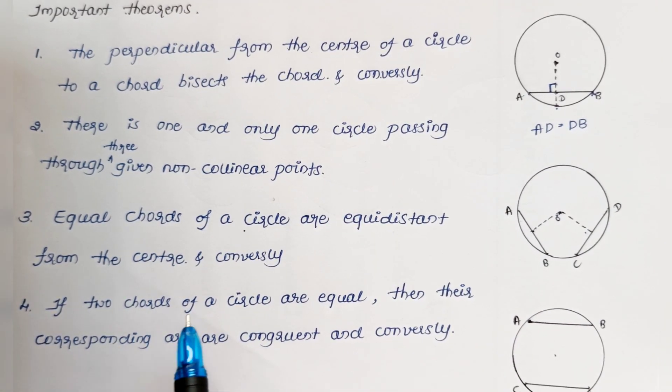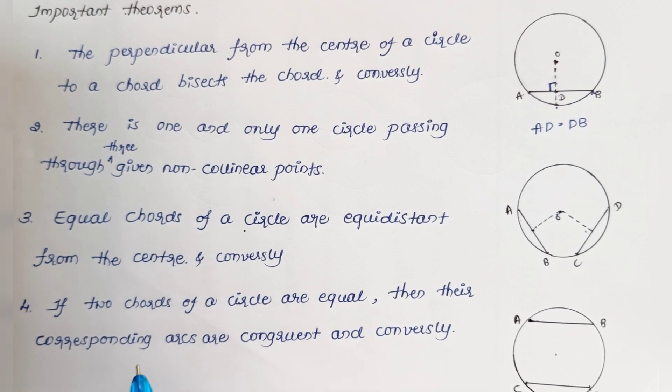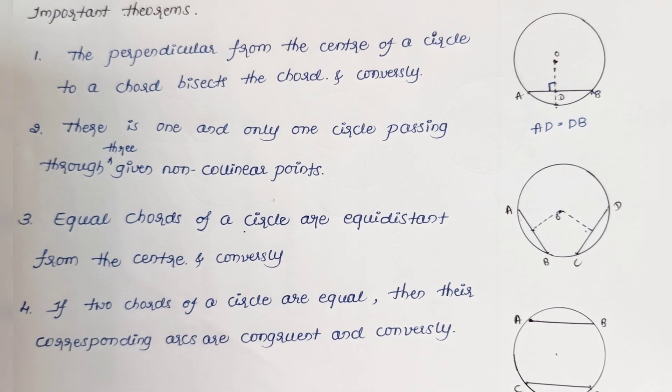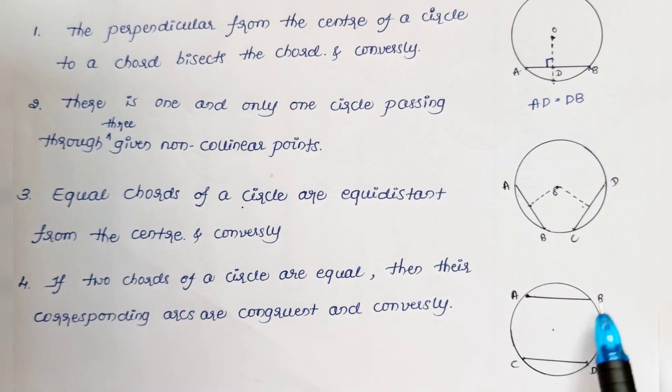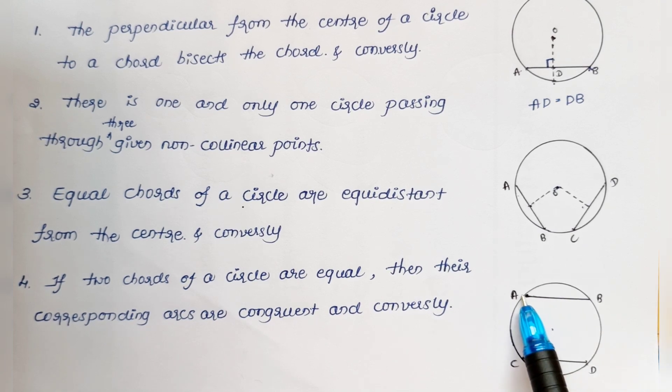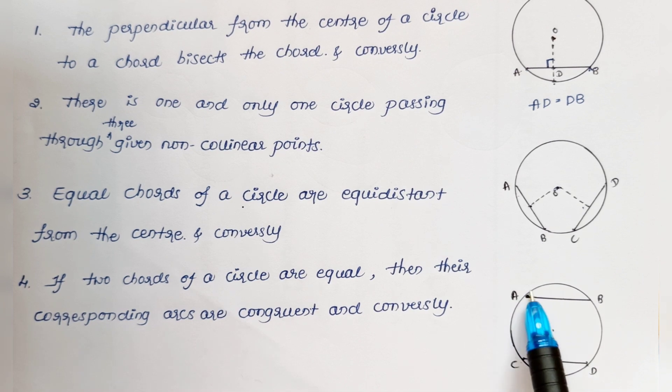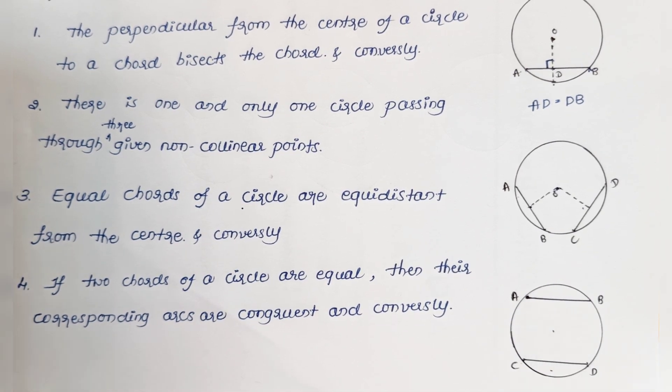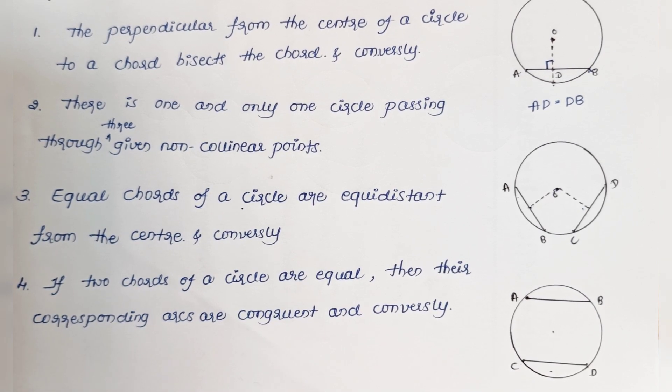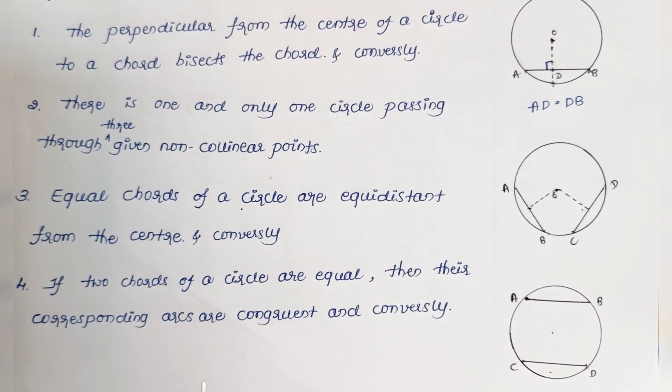If two chords of a circle are equal, then their corresponding arcs are congruent, and conversely. So equal chords means AB and CD are equal, and their arcs are also equal. They will superimpose on each other. They will coincide. That is the meaning of congruent.